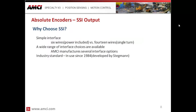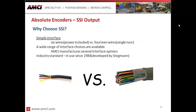So why choose SSI? You might have applications using a parallel-type encoder, analog, or some other type of sensor. The simplicity of the interface is a key factor — six wires for an SSI encoder including power, versus 14 for a simple 12-bit single-turn parallel application. Wiring can become a challenge when dealing with high-resolution single-turn parallel outputs or 20-plus-bit multi-turn encoders. Even with resolvers in multi-turn applications, you're dealing with 12-plus wires. SSI may help reduce installation costs.